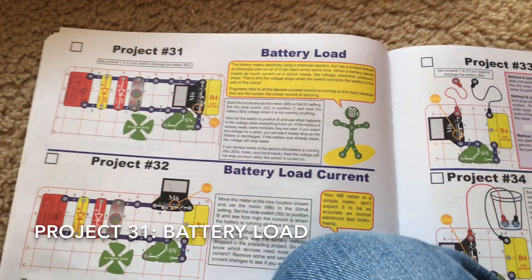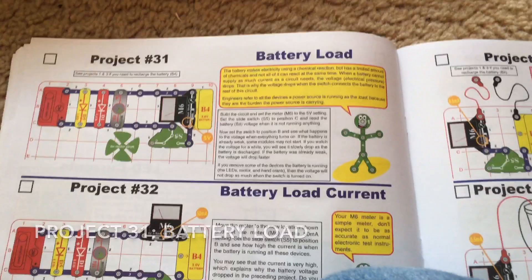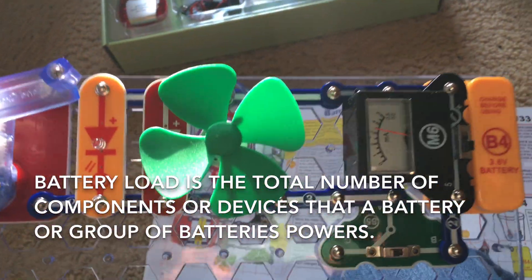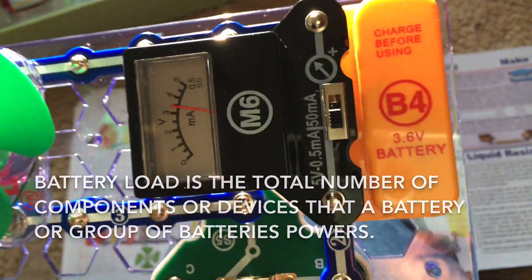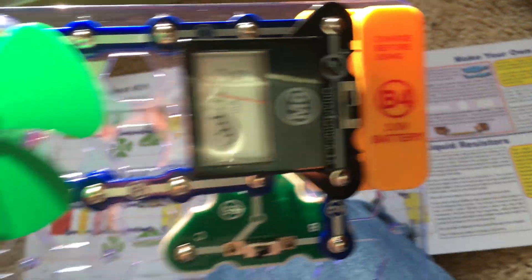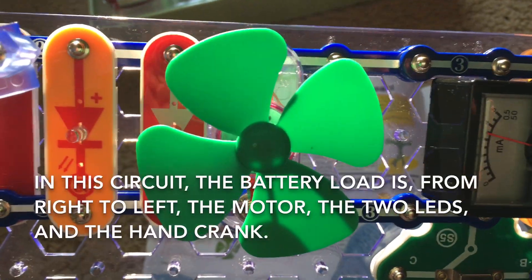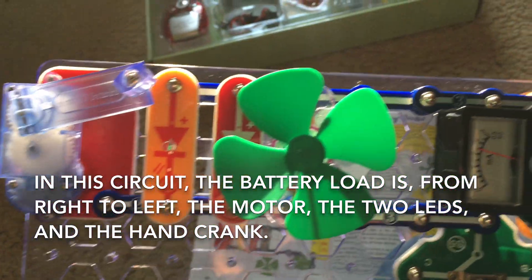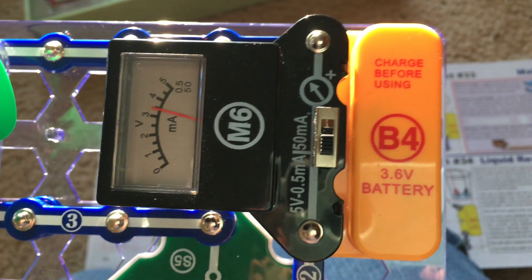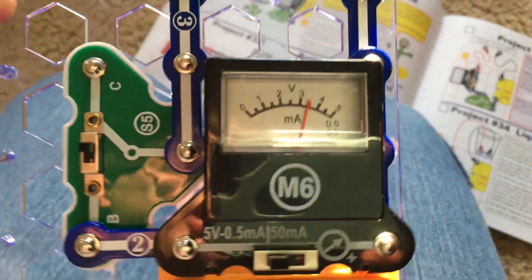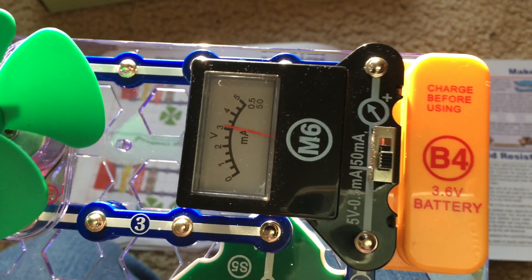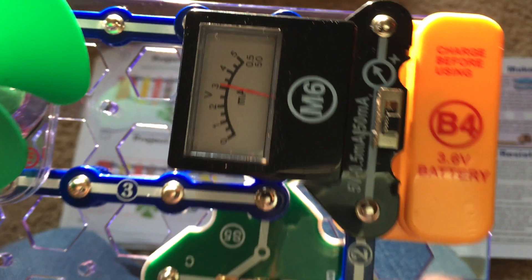We are now going to talk about battery load. Battery load is the total number of components that a battery is supplying current to. In this case the battery is supplying current to the regular motor, the two LEDs, and the hand crank. The voltage meter, which is connected directly across the battery, is set on the 5 volts setting and now reads just over 3 volts.